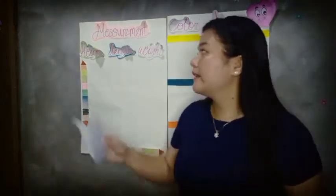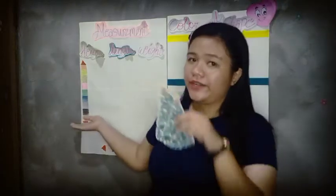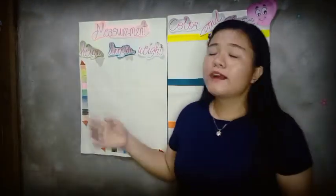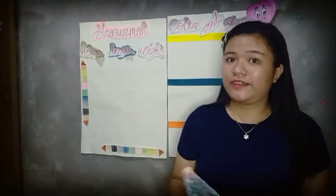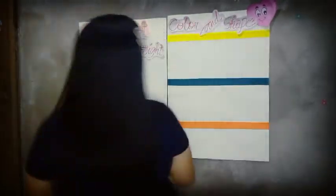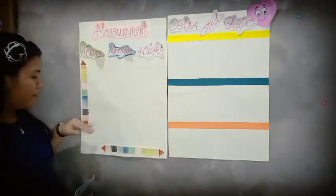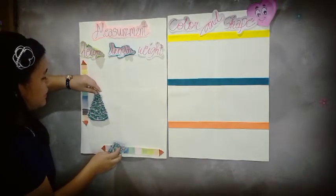We have here two pictures of Christmas trees. Are they the same or not? We will try to find out or describe these objects by measuring their height. We will use our magic ruler to measure the height of these objects. We measure it from the bottom up to the top.